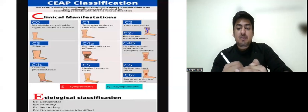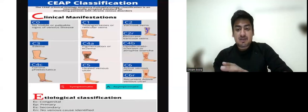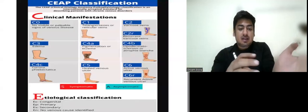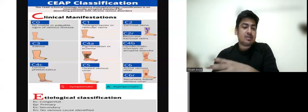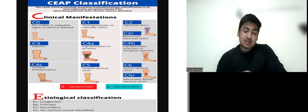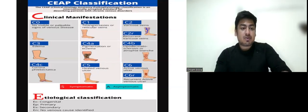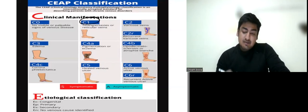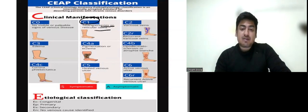So first of all we will discuss the clinical manifestation and the numbers are in sequences like this is how the varicose veins progresses. So we have C0 that is normal. C0 is no visible or palpable signs of venous disease. Then we have C1 which is the earliest stage in which there is telangiectasia or reticular veins visible.